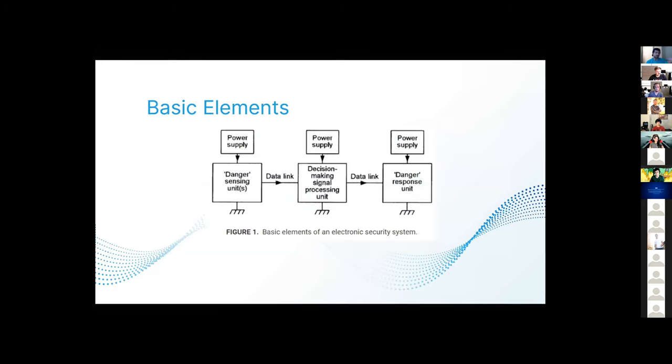This figure has some basic elements. One or more danger sensing units are placed in front of the system and generate some sort of electrical output when there's danger. The output of the sensor unit is fed to a data link that then goes to a decision-making signal processing unit. This output is fed to another data link that goes to a danger response unit, such as an alarm or some sort of electromechanical trigger or shutdown device. Note how in this diagram each unit has its own power supply. But in real life, it's very likely that each unit would share the same power supply.